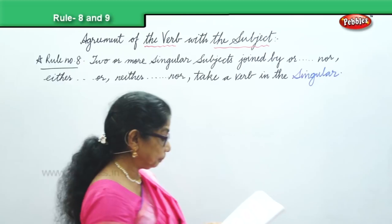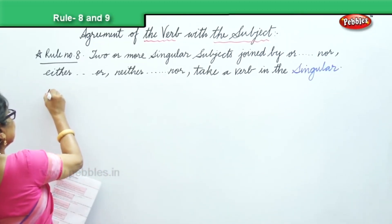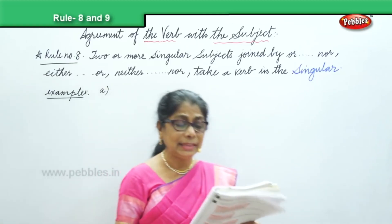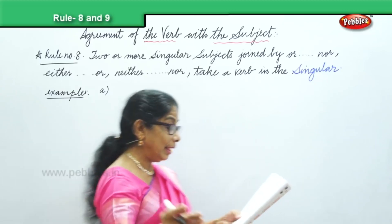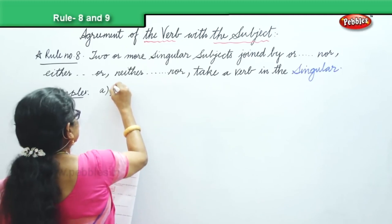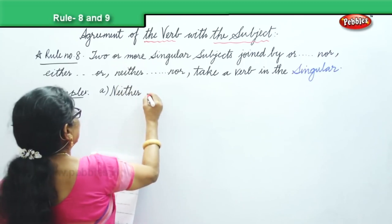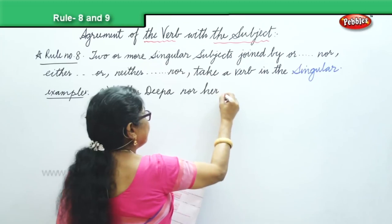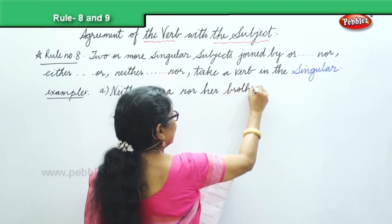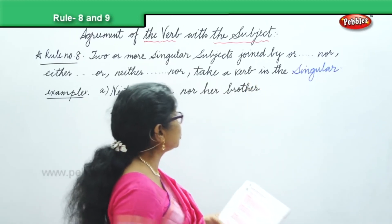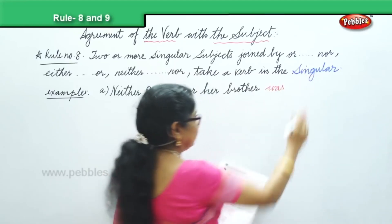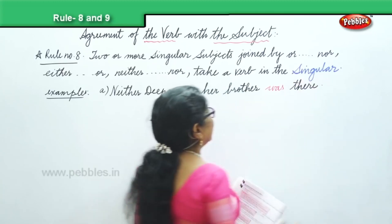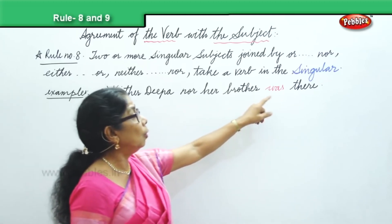Let's look at the examples we have here. First example: 'Neither Deepa nor her brother was there.' Neither Deepa nor her brother — 'was' is the singular form of the verb. So: Neither Deepa nor her brother was there.